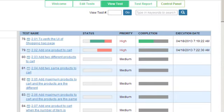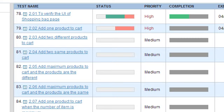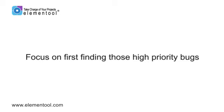Make sure to give a priority to each test, running the highest priority tests first, before working your way down to the lowest priority. You want to focus on first finding those high priority bugs — the ones that do major damage like crashing the software. If the schedule allows, you can then move on to the lower priority issues.